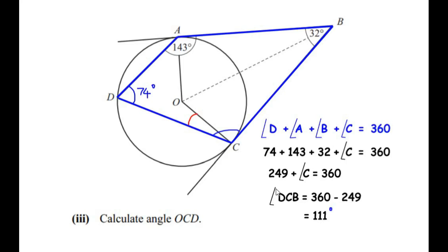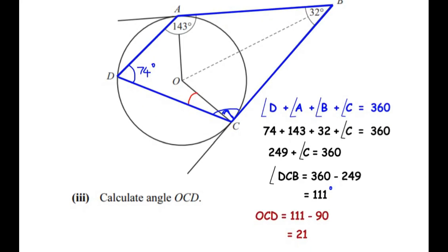Now we need to find the small angle OCD. We make use of the radius-tangent theorem again: OC is the radius to which tangent BC is connected, so angle OCB is 90 degrees. Out of the total 111 degrees, 90 degrees belong to angle OCB, so the remaining angle OCD equals 111 minus 90, which gives us 21 degrees.